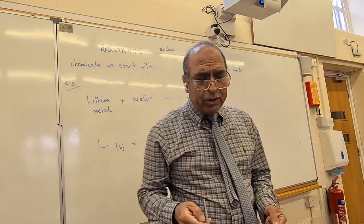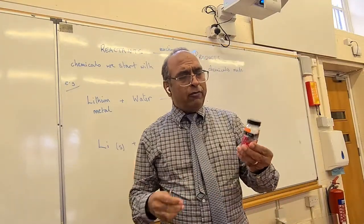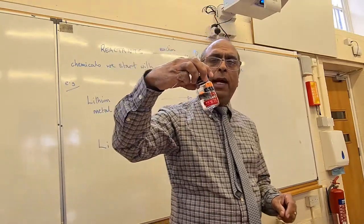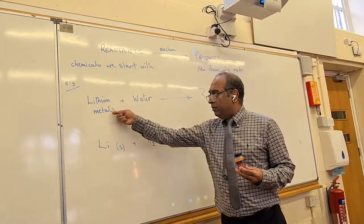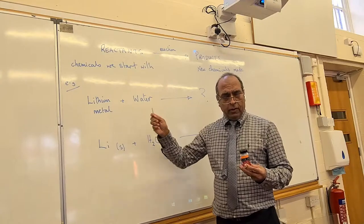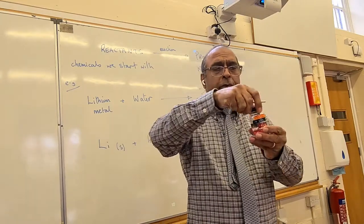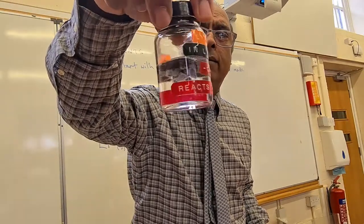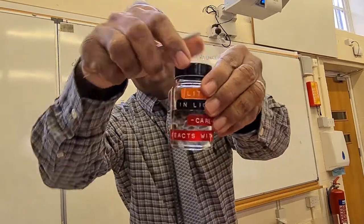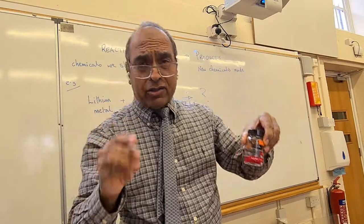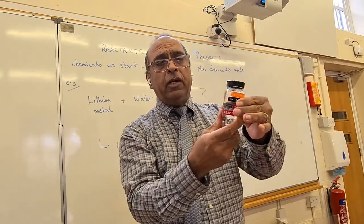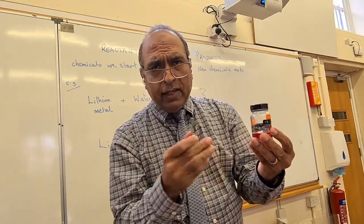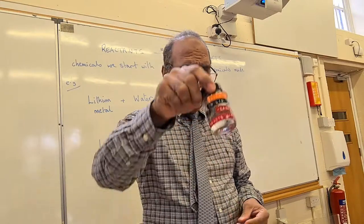The example I'm going to start with is lithium metal reacting with water. I've got a trough of water. The lithium metal is stored in oil because lithium is so very reactive that it would react with the air if left exposed. Putting it under oil stops it reacting with the air, so lithium is kept in oil.